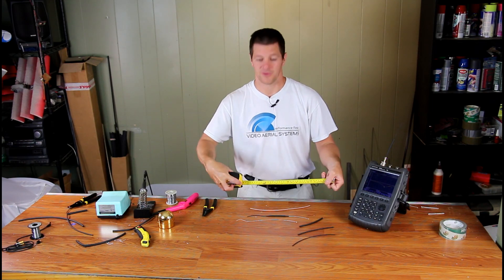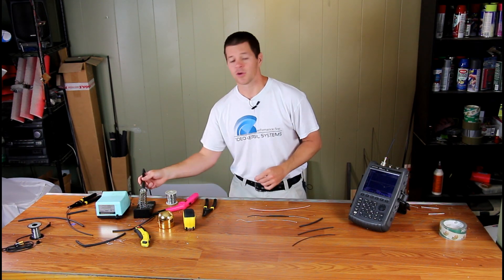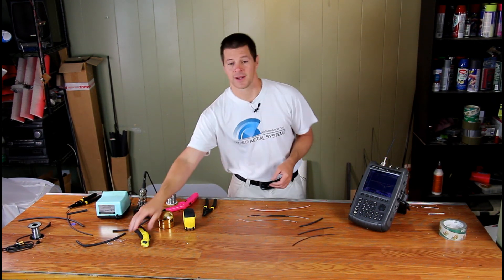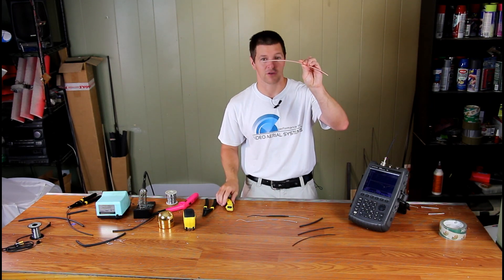Of course you're going to need a tape measure to measure it. That's more than accurate enough. You do not need a caliper for this. You're going to of course need a soldering iron to solder everything up and then you're going to need a knife to strip off the jacket of your RG142 cable.